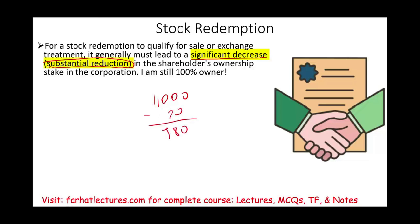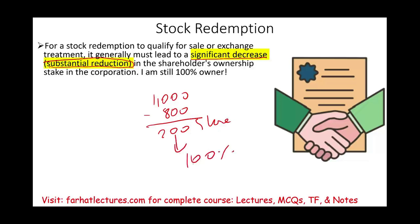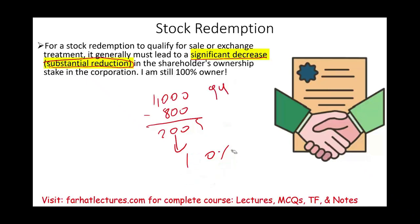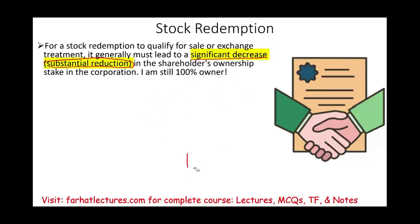Let's assume rather than 20, I sold back 800 of my shares. I still have 200 shares. Those 200 shares still represent 100% ownership. So even if I sell 999 shares of the 1,000 back to the company, I'm still 100% owner. So there's no substantial reduction in my ownership. Therefore, this doesn't look like a sale — this looks like a dividend.